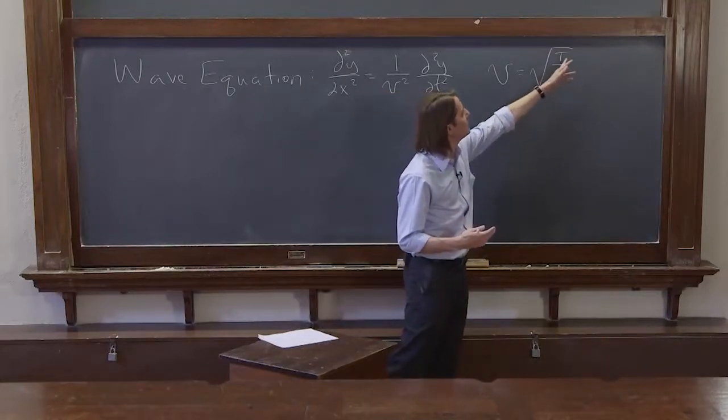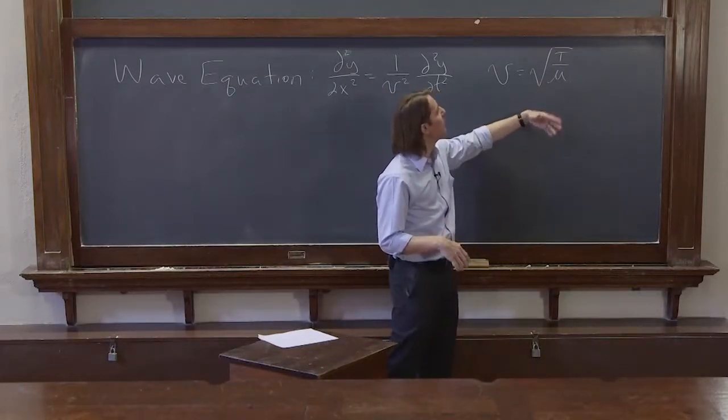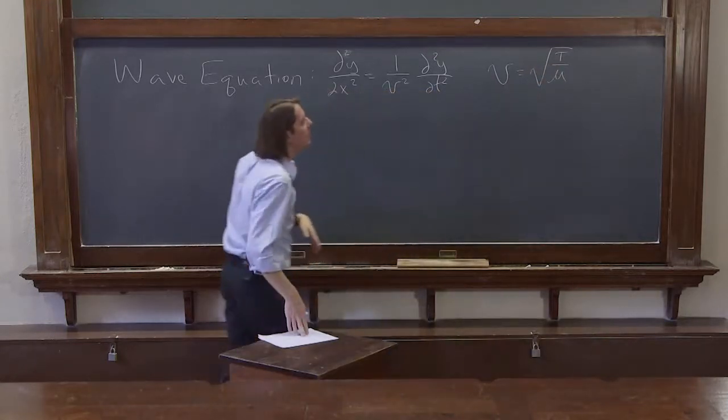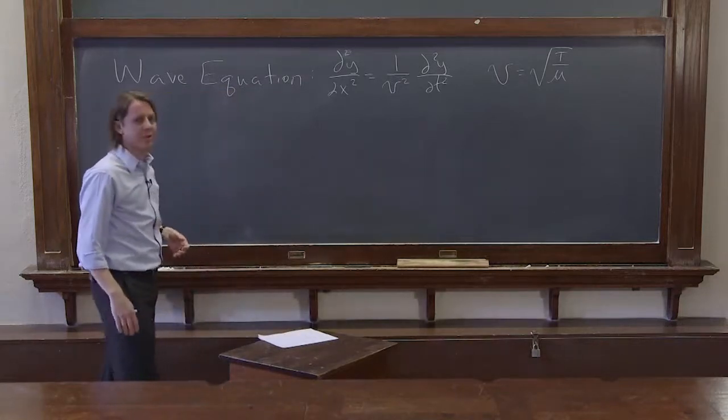Here, if the string has a tension T and a mass density μ, we can combine those to give you some natural property of the string, in this case, the velocity of the wave equation and the velocity of the waves.